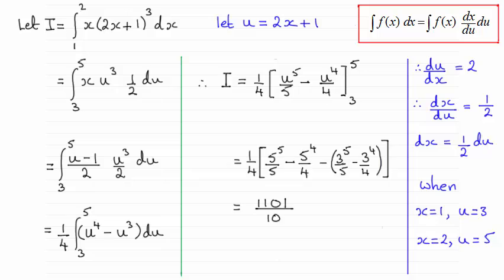And substituting those limits in gives us this which reduces down to 1,101 all over 10.